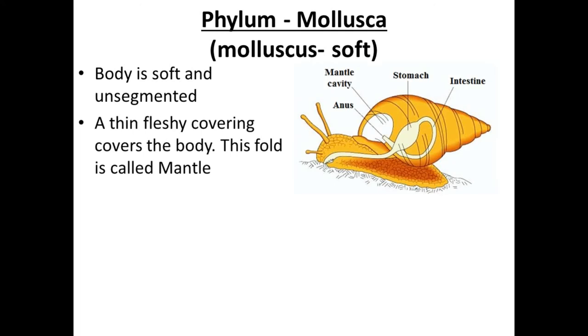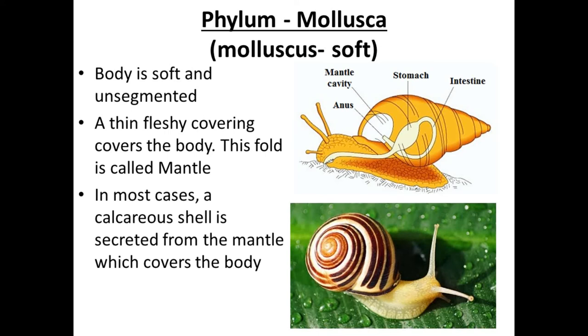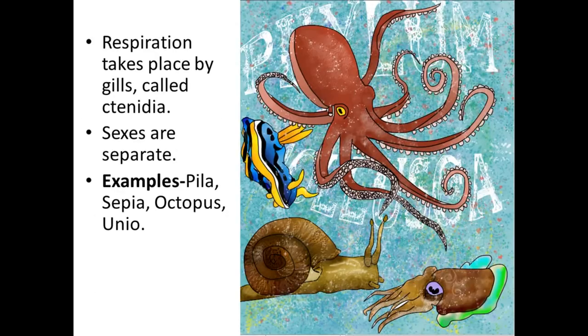Then Phylum Mollusca. 'Mollusca' means soft — their body is soft and unsegmented. A fleshy covering called the mantle covers the body. In most cases, a calcareous shell secreted from the mantle covers the body for protection. They have a complete alimentary canal. Respiration takes place by gills, as they generally live in water. Sexes are separate. Examples: Pila, Sepia, Octopus, Unio.